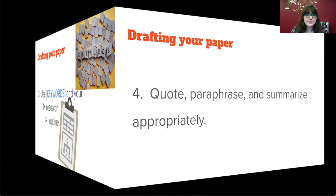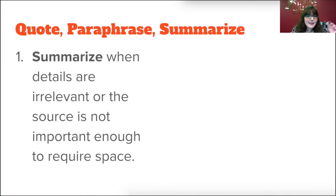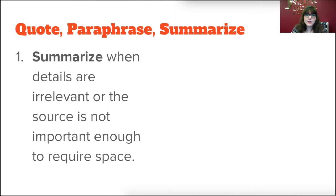The next thing is to quote, paraphrase, and summarize appropriately. You want to summarize when the details are irrelevant or the source isn't important enough to require space. Maybe you have a source that talks about a general idea you really like, but the exact quotations and details don't support or detract from your claim. You can just summarize it — you still want to cite that you used it, but you can give it minimal space in your paper.